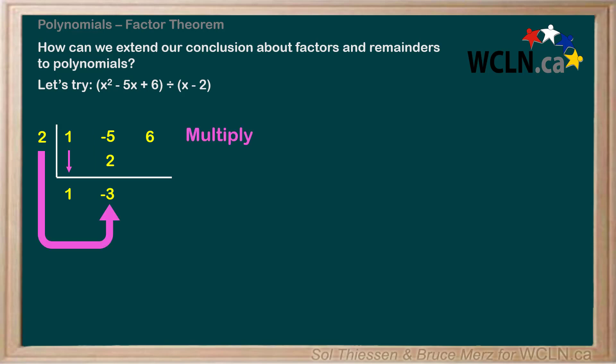Multiplying 2 times negative 3 gives us negative 6, which we write under the last coefficient. Finally, we add 6 and negative 6 to get 0. The last number of our result in synthetic division represents the remainder. Here, our remainder is 0.